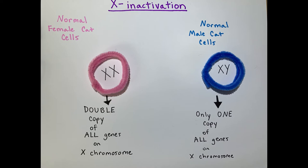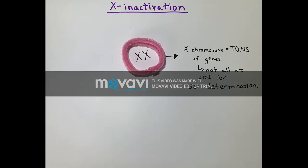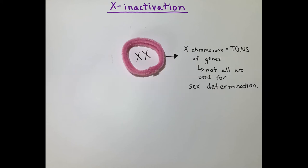The X chromosome contains more genetic material than what only correlates with sex determination. And rather than the female cell having two times the expression of genes, one random X chromosome is inactivated. This is referred to as a mosaic collection of expression from different X chromosomes, depending on the X chromosome the cell chooses to activate.